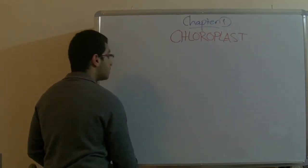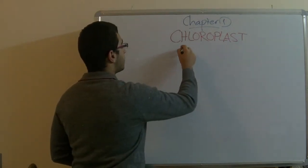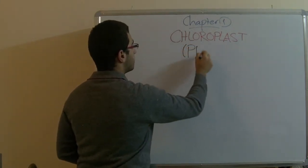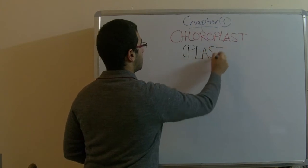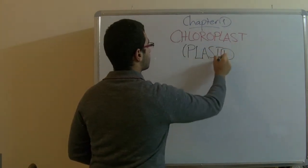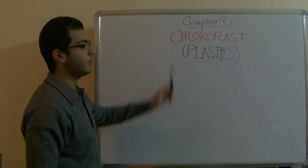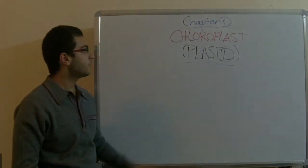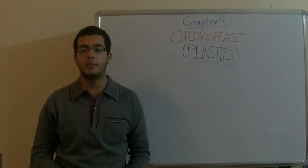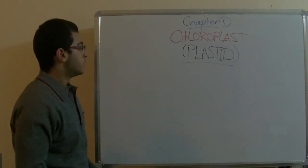And as a note, the chloroplast is a plastid. The chloroplast is a green plastid. And of course, the green plastid is found in the plant cell.